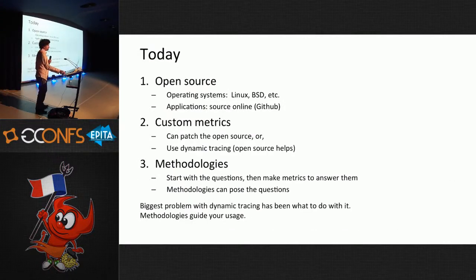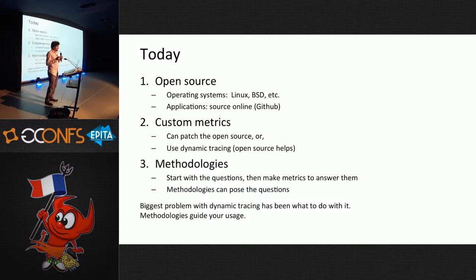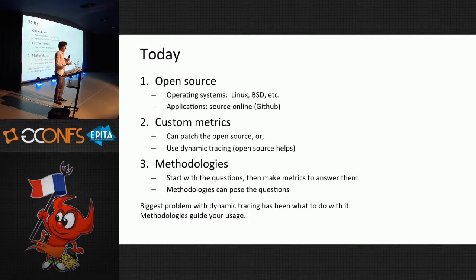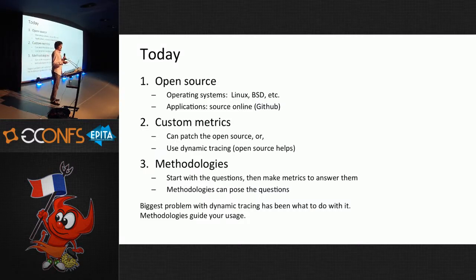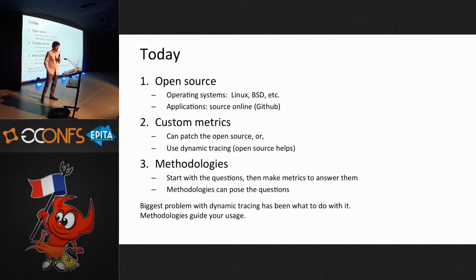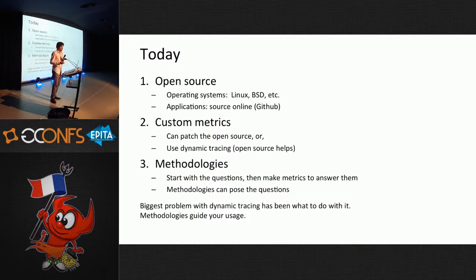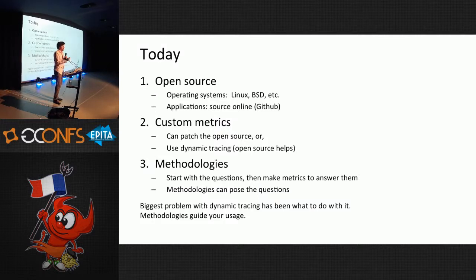Today it's really different and exciting. Almost everything we expect is open source now, and we can do custom metrics. If it's open source, I can take the source code and write in some instrumentation I need. But we also live in the era of dynamic tracing — I can instrument any software at all and get metrics out. It's now more useful than ever to think about methodologies. One problem with dynamic tracing is since you can instrument all software — tens of thousands of functions — you can really drown in metrics. Methodologies help guide you through those metrics to find the most important ones.